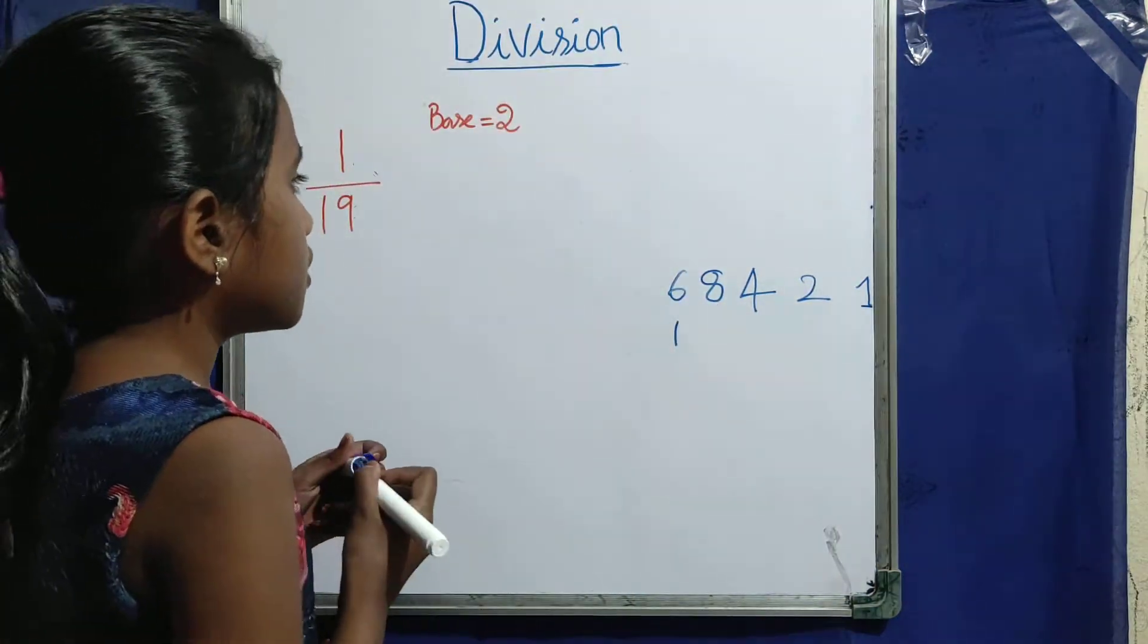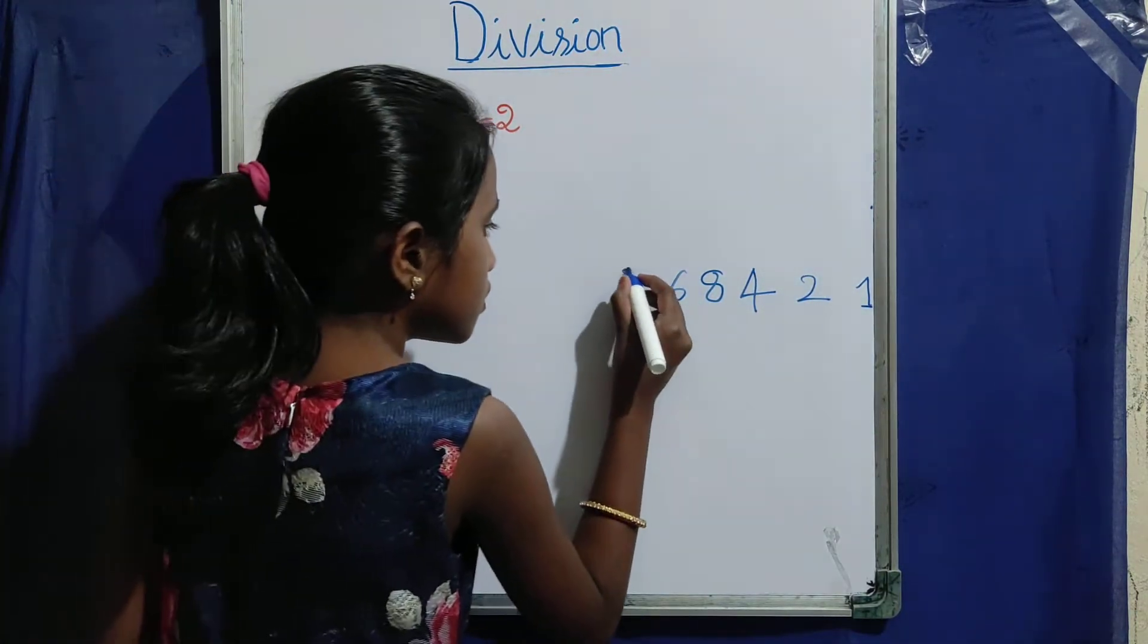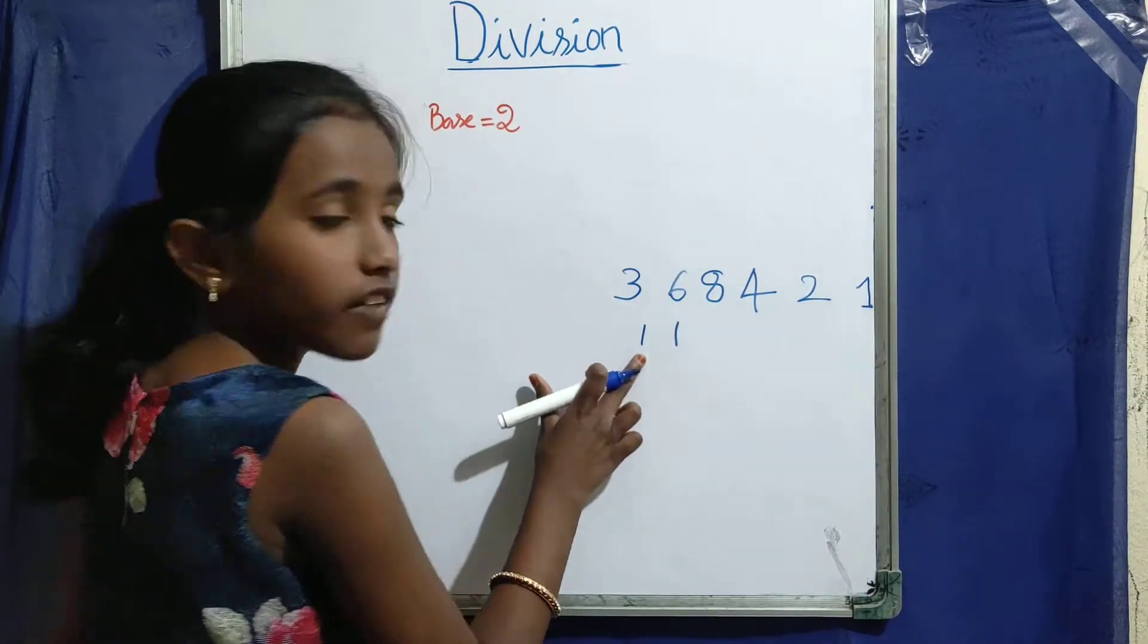Next. 6 twos, 12. Plus 1, 13. 2, 3, 6. Plus 1, 7.